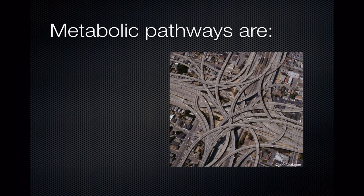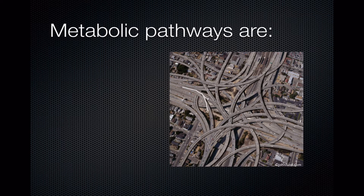Metabolic pathways can be thought of as a tangled system of highways. You can think of the chain of chemical reactions that make up metabolic pathways as being like a roadway, and all the little cars on the roadway are little bundles of energy. So energy can come in on one road and connect to other roads, and it can get to decision points where it can go one way or another. The energy is going to start somewhere and it's going to end up somewhere else.